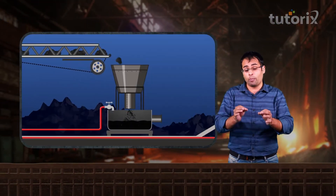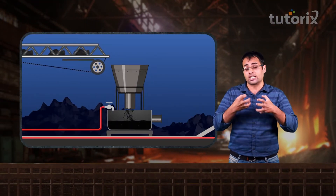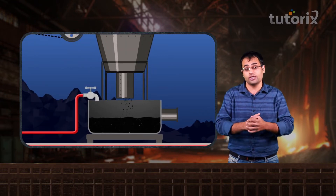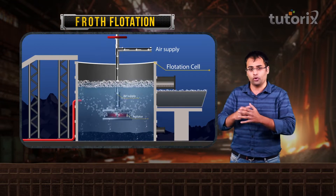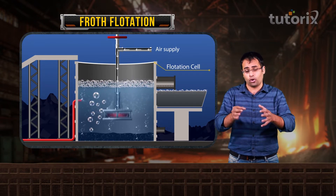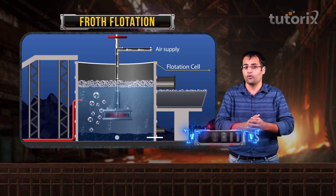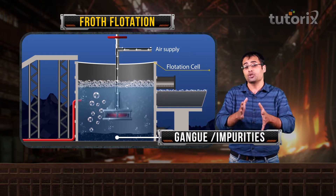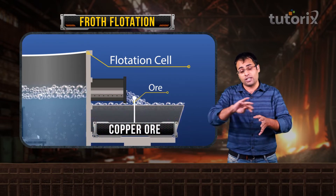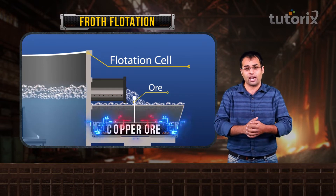A small part of this extraction process you have already learned in previous classes. Copper, when it is first mined from the earth's crust in the form of its ore, is powdered and crushed and is concentrated by the process of froth flotation. In this process, copper-containing ore rises to the surface in the form of froth, and the impurities or gangue particles settle at the bottom of the tank. This froth can be skimmed off and pure copper ore can be recovered.